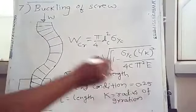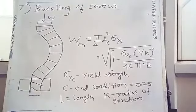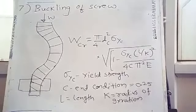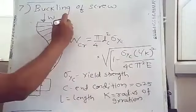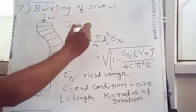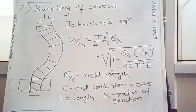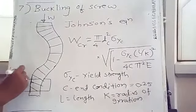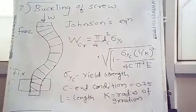This is the last equation — buckling is based on Johnson's equation. There are various theories: Euler, Rankine, and Johnson. For one end fixed and another end free, C equals 0.25. This is for additional information only, as per the syllabus the main focus is on design of screw and nut.